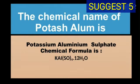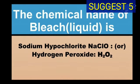The chemical name of potassium alum is potassium aluminum sulfate and chemical formula of potassium alum is KAl(SO4)2·12H2O.